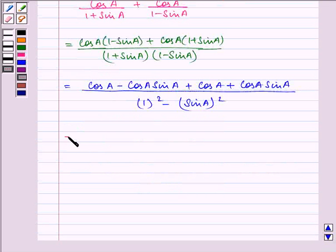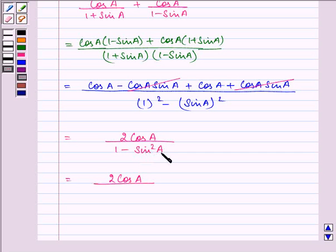Simplifying it further we have 2 cos A upon 1 minus sin square A. We know that we can write 1 minus sin square A as cos square A.